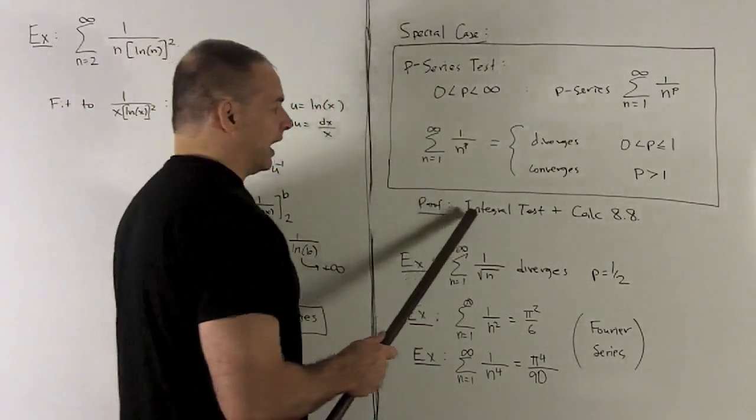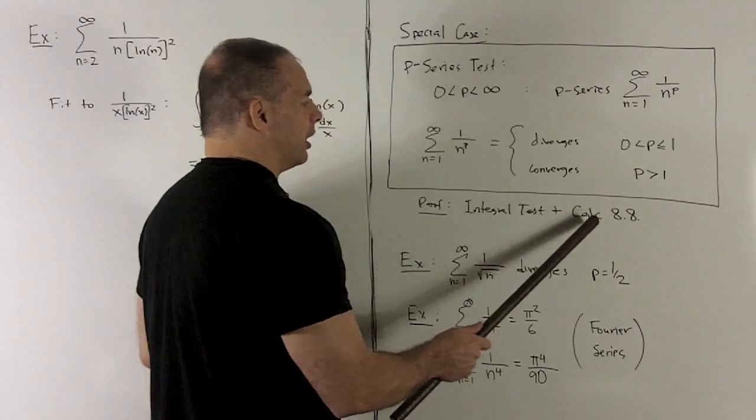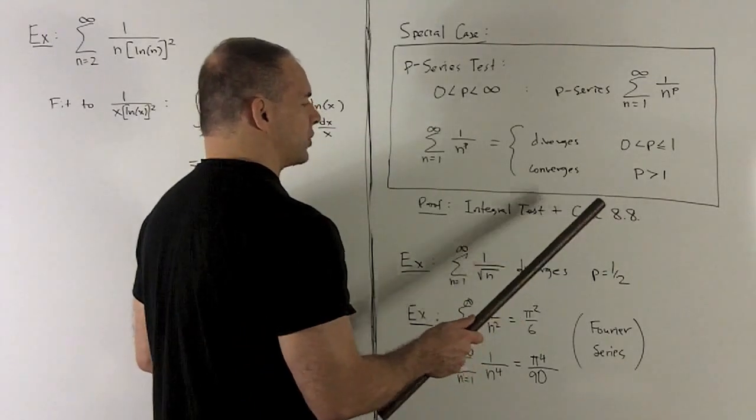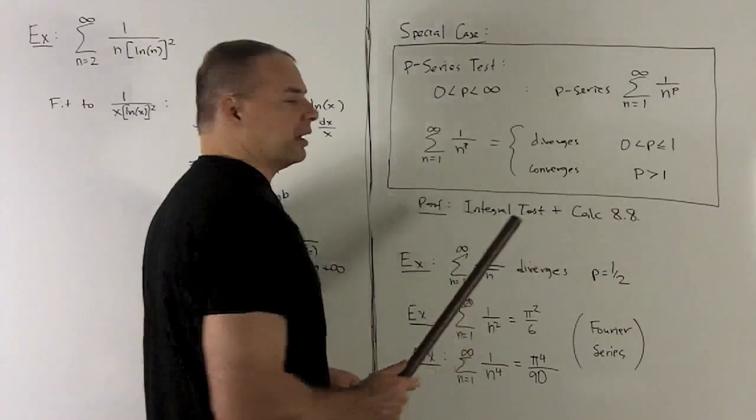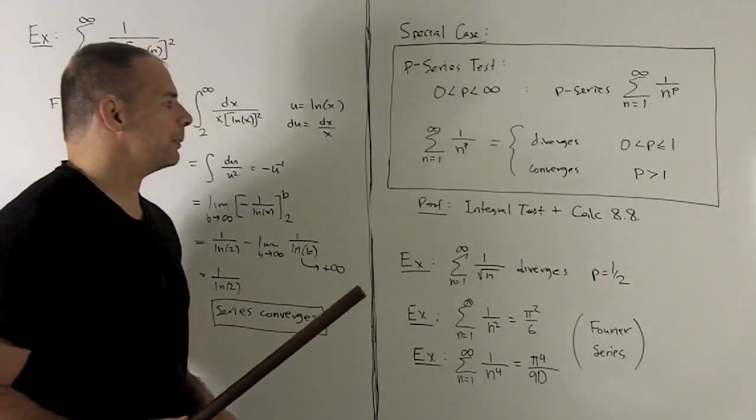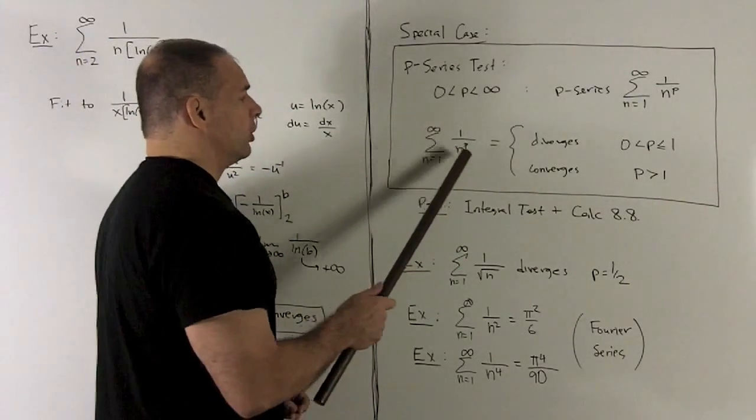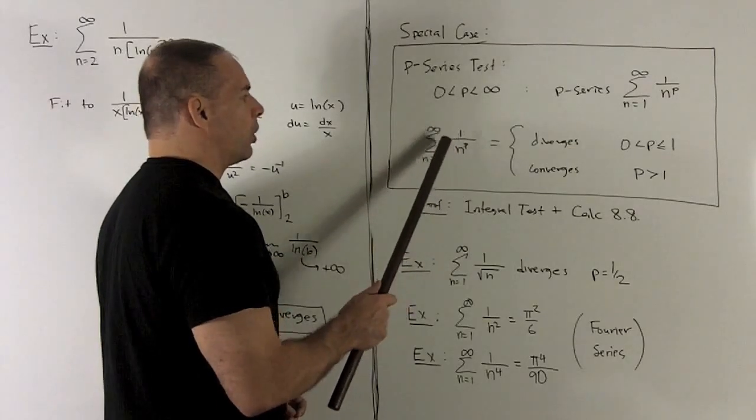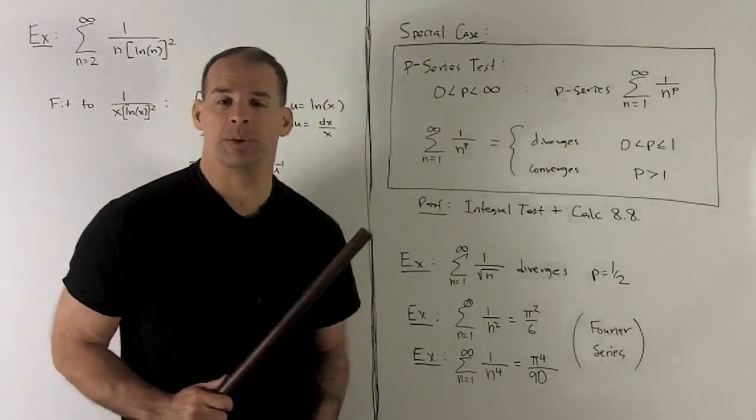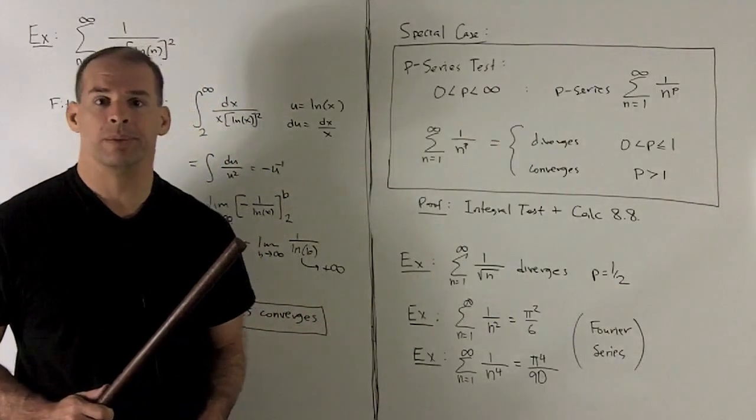Proof of this, it's going to be the integral test. And then, if you want to know how to do that integral, that's going to be calc video 8.8, I think part 3 or 4. Anyhow, all you're going to do is take your sequence here, fit it to 1 over x to the p, and then just compute that improper integral. Pretty straightforward.